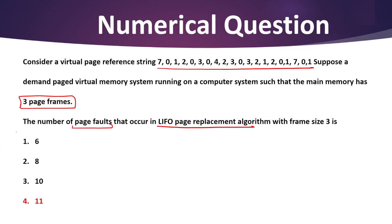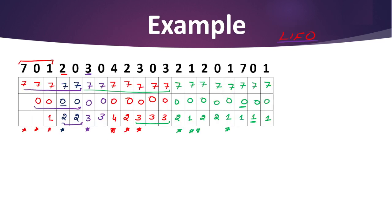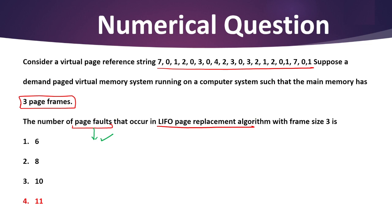Now, in this question they asked about the number of page faults. Counting up: 1, 2, 3, 4, 5, 6, 7, 8, 9, 10, 11, and 12. The total number of page faults in this question is 12 — not 11. This is a very important topic and question.